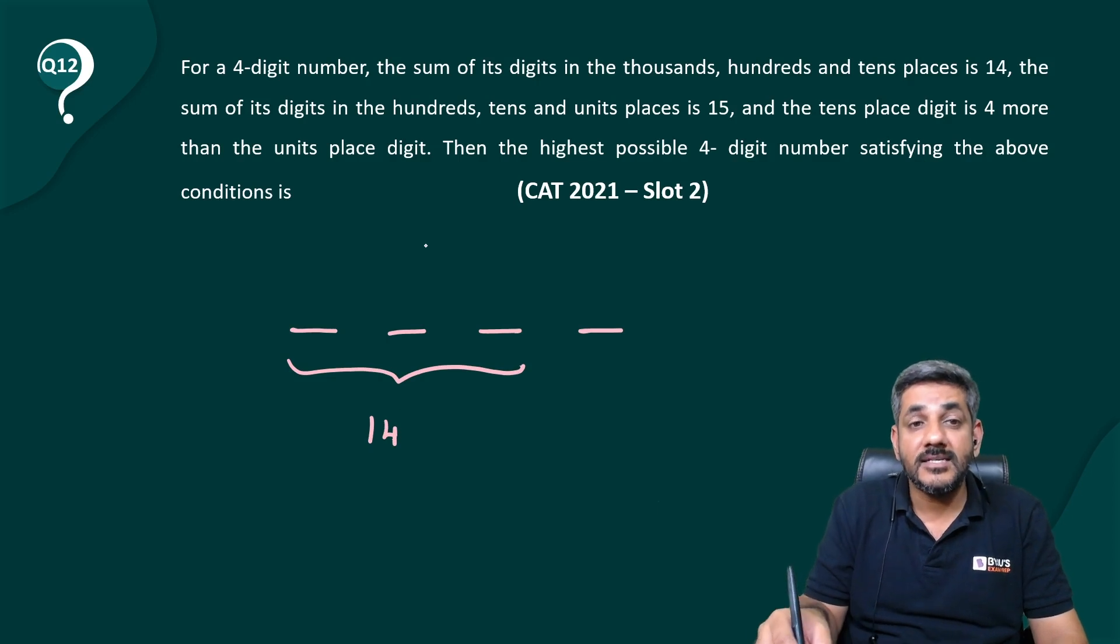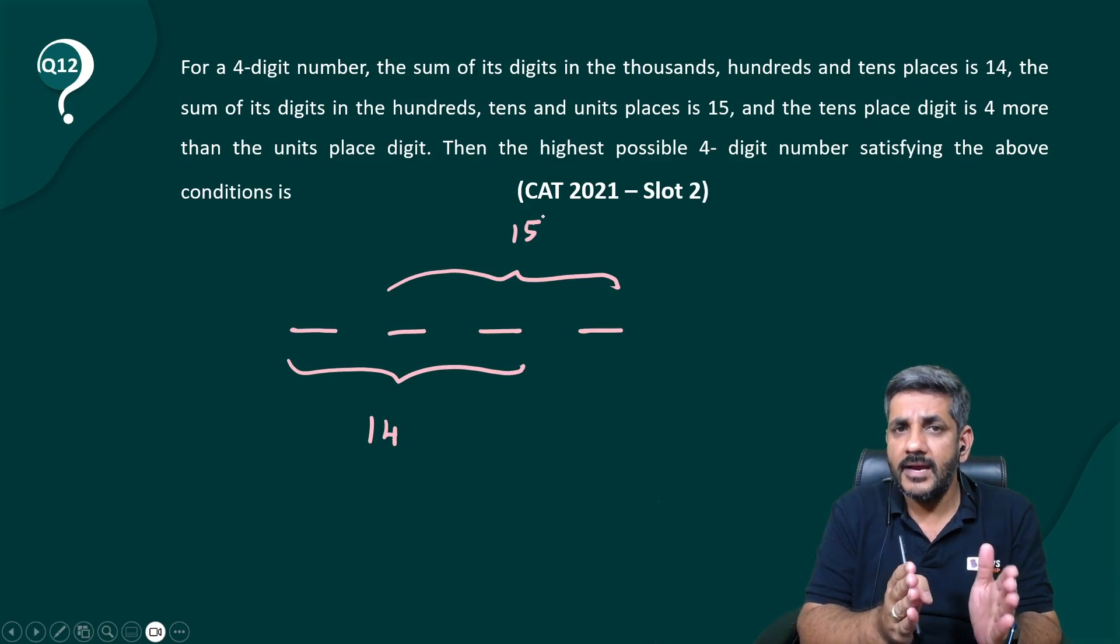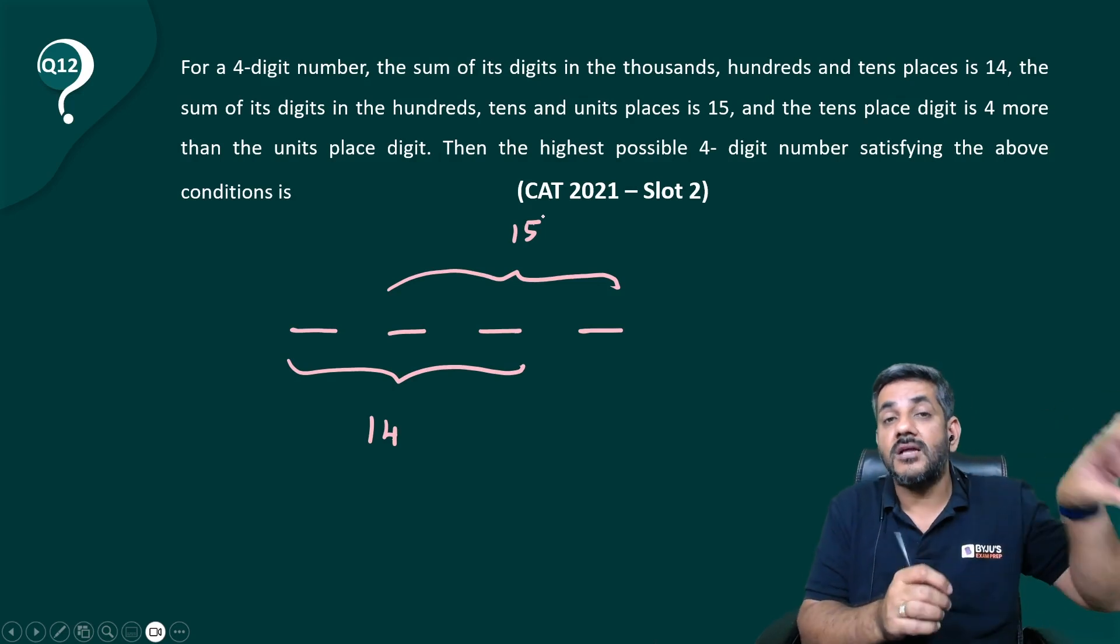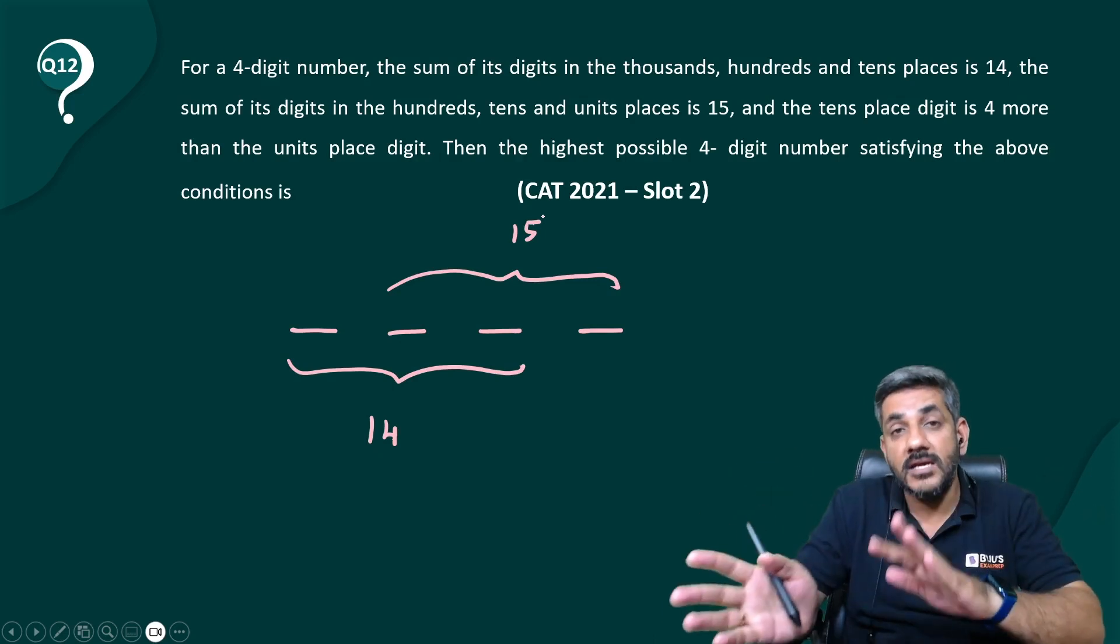And the sum of the digits in hundreds, tens and units is 15. So, sum of these three is equal to 15. Now, I see that the middle two digits are common in both the sums. In the first sum, we have the thousandth digit. In the second sum, we have the unit digit. The sum increases by one.